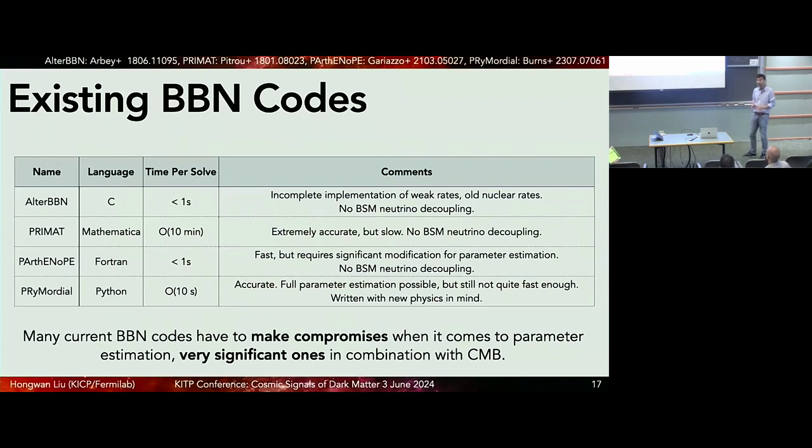If you look at what existing BBN codes can do, I'm only going to talk about open source BBN codes, things that everyone can use. There are essentially four on the market. There's ALTA BBN, which is a C-based code. For various reasons, it's very good for solving new physics very quickly, but it doesn't have the same precision as many of the other codes available. Then there are things like Primat and Parthenope, which take two different approaches to how to do this calculation. Primat does everything extremely accurately in Mathematica. But in the end, when you ask it to solve for the BBN evaluation, it takes something like order a few minutes. Parthenope does things very quickly, but it's very difficult to hack. Also, it's written in Fortran, which doesn't really help. And then a more recent implementation is Primordial, which is an excellent code. It's written with new physics in mind, so it's really good for hacking. You can try to do full parameter estimation, but unfortunately the runtime is still on the order of 10 seconds, which is still not quite what we need.